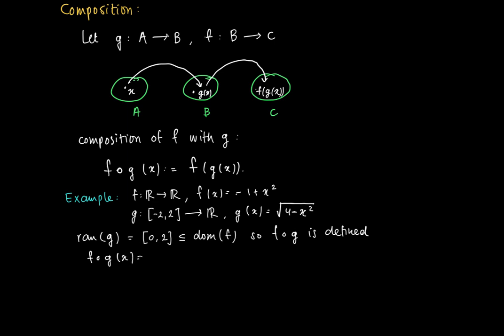So f through g is no more than mapping the image g(x) using f, and then we substitute g(x) into the prescription for the function f. So minus 1, and here is g(x), and we should square g(x). So actually f through g at x, if we simplify this term, equals 3 minus x squared.